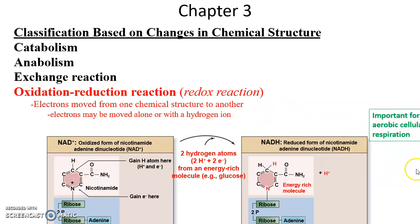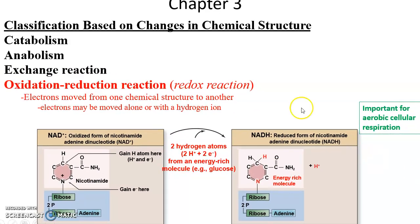Oxidation-reduction reactions are a little more complicated, but they involve the movement of electrons from one structure to another, and they can be moved alone or with hydrogen ions. Here, NAD+ can gain electrons while at the same time gaining hydrogen, and then that can be used later on. This oxidation-reduction reaction is very important for aerobic cellular respiration.